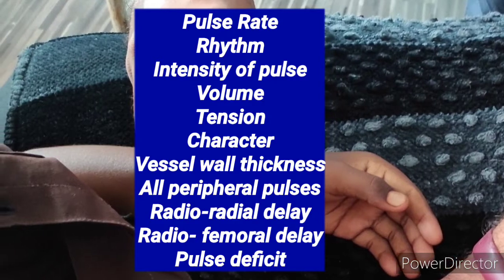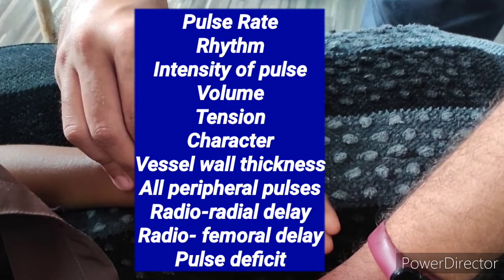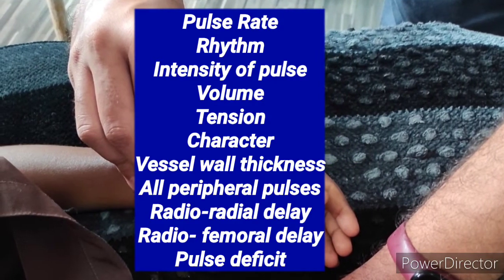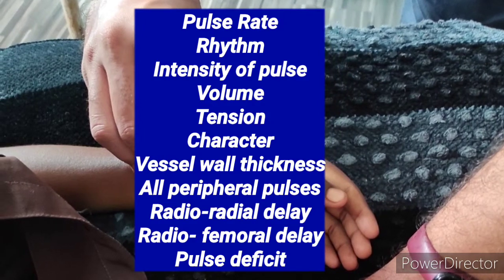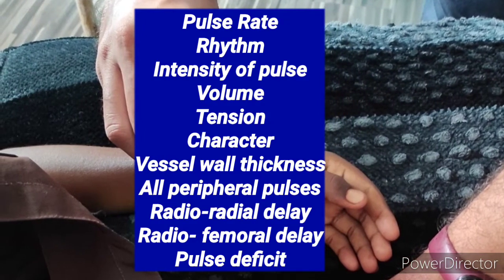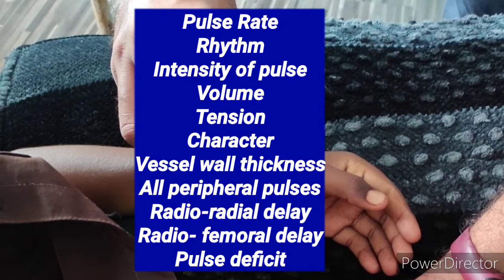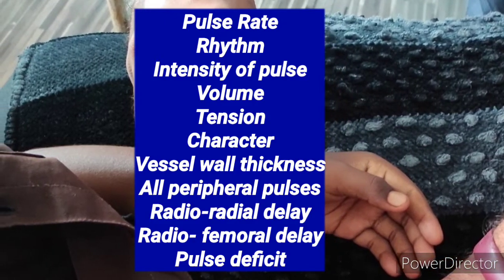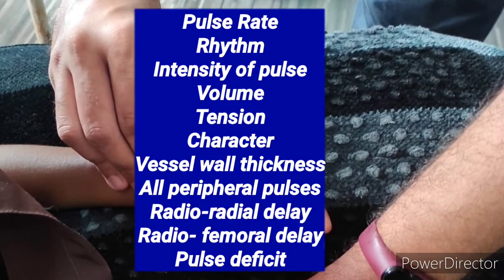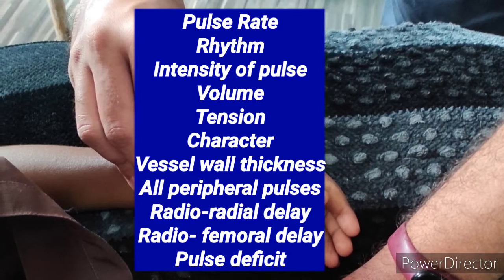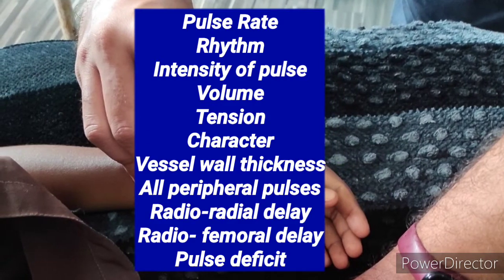We have to calculate the pulse rate for a full 1 minute in the radial artery. Then we have to check the rhythm and intensity of the pulse. Then we have to check the volume, tension, and character in the carotid artery pulse. Then we have to check the vessel wall thickness. Then all peripheral pulses should be palpated, and we have to check any radio-radial delay, radio-femoral delay, or pulse deficit.